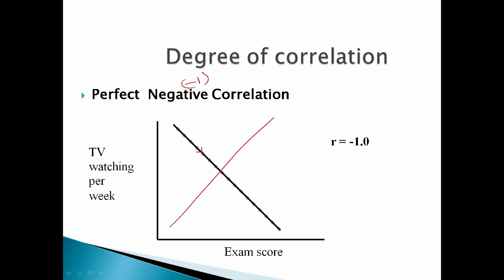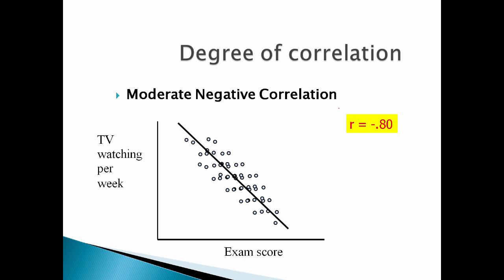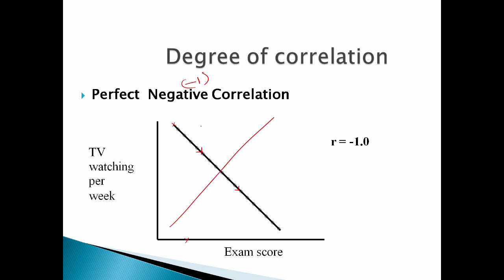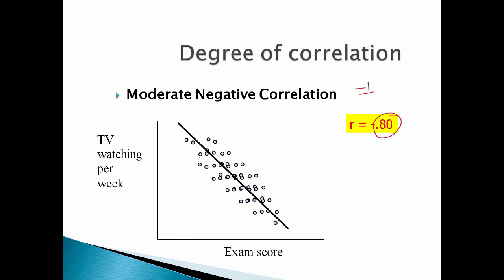This is the other part — we call it just positive, but the opposite is negative correlation. For example, TV watching hours per week versus exam scores: as TV watching hours increase, exam scores decrease. Moderate negative correlation means R is around minus 0.4 to minus 0.7. Perfect negative correlation has R equal to minus 1, so all the points pass exactly on the line. In moderate negative, the points are tilted but not exactly on the line.